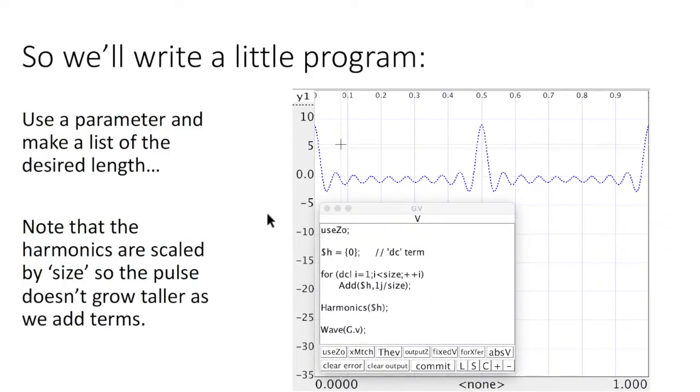It gets tiresome to type all those 1js, so we're going to use SimSmith's programming anvil to write a little program. And the little program is for I, an index, 1 to whatever size I might choose, add a harmonic of 1j divided by size. And we put in the divided by size so that this pulse doesn't get taller as we add harmonics and make it more narrow.